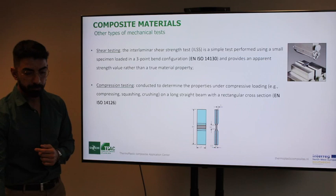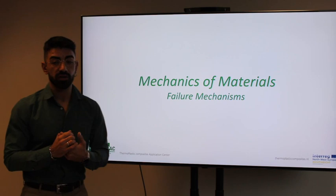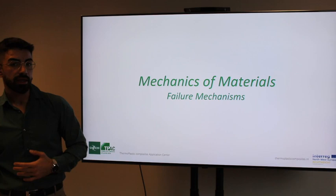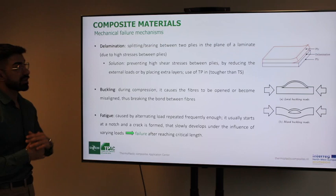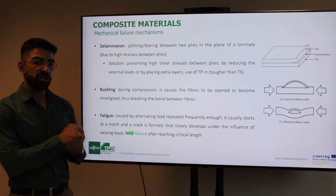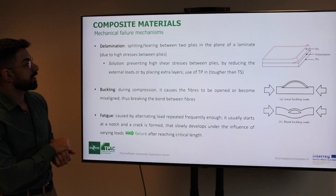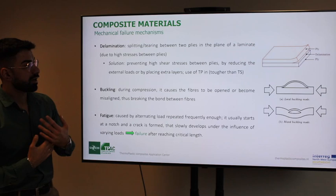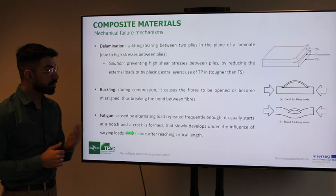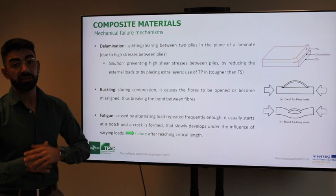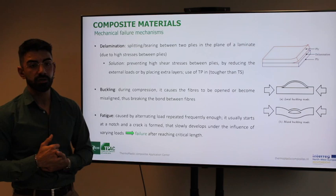Moving to failure mechanisms of composites. One is delamination — the splitting or tearing between plies in the plane of a laminate — which occurs when the consolidation between plies is not good enough. A solution is to prevent high shear stress between plies, which is why a key laminate design tip is to avoid jumps in stiffness among plies. This can be achieved by reducing external loads, placing extra layers, or using thermoplastic instead of thermoset material. Another failure mode is buckling: during compression, buckling causes fibers to open or become misaligned, breaking the bonds between fibers.